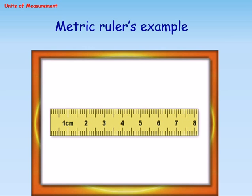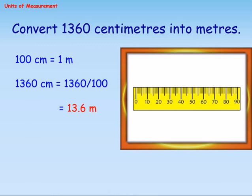Metric rule example: Convert 1,360 centimeters into meters. 100 centimeters equals 1 meter. So 1,360 centimeters equals 1,360 over 100 equals 13.6 meters.